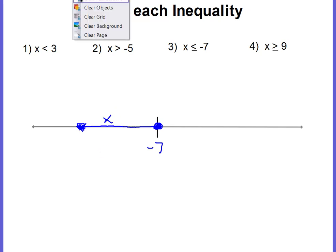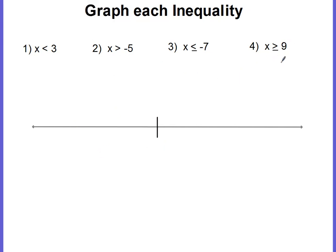In our last example: x is greater than or equal to 9. We're going to label the 9 and put our circle. Do we fill it in? Yes, we sure do, because it is equal to — it has that little equals line. The alligator is eating the x, so the x has to be larger than 9 and the x line is going to go to the right. And that's what that graph would look like.